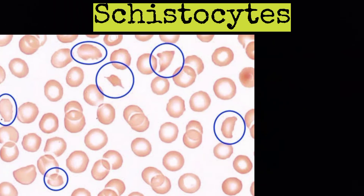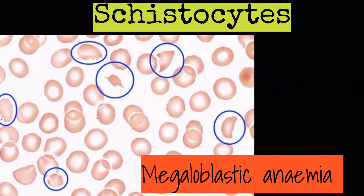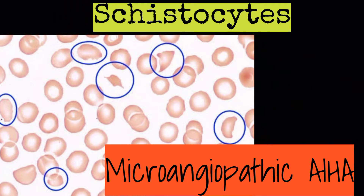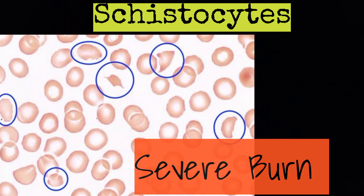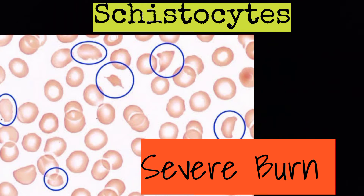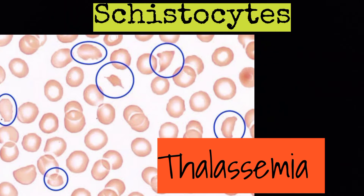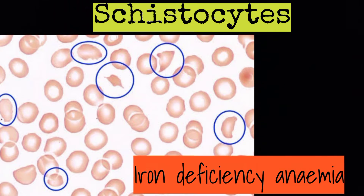Schistocytes, that is fragmented RBCs. Examples: megaloblastic anemia, microangiopathic hemolytic anemia, severe burns, thalassemia, and iron deficiency.